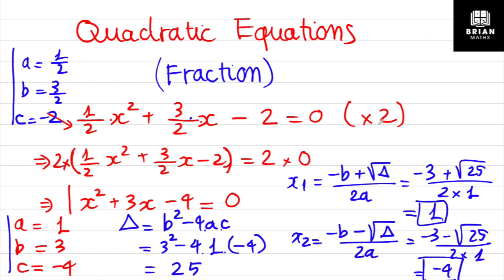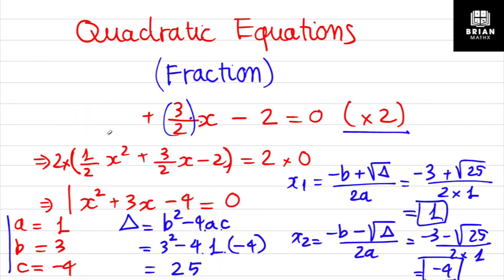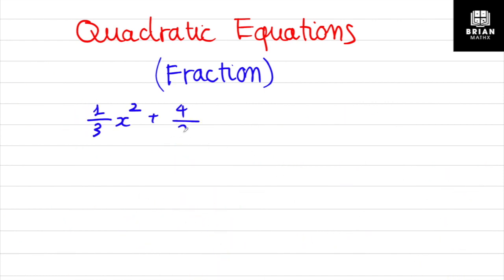So for this kind of exercise with fractional coefficients, after we multiply both sides by the appropriate number we get integer coefficients, and then we apply the quadratic formula for solving. Now let's look at the second example. You can see the values are a = 1/3, b = 1/2, and c = negative 5/6.